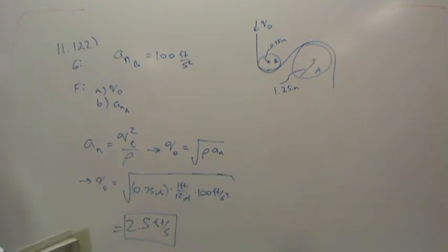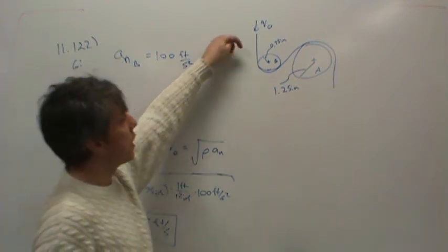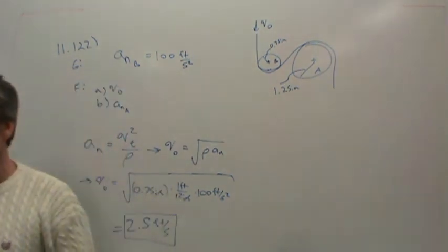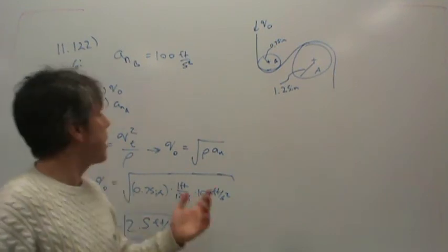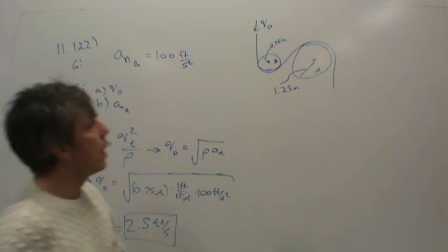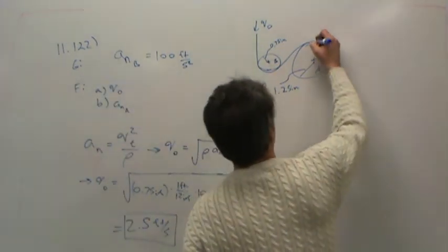They didn't tell us anything. I misread it. I was thinking for some reason that they gave us a tangential acceleration as well to deal with. They didn't. We don't know if the belt is speeding up or slowing down or remaining at constant speed. It turns out it doesn't matter because the only other thing they want is the normal acceleration of the belt on A.